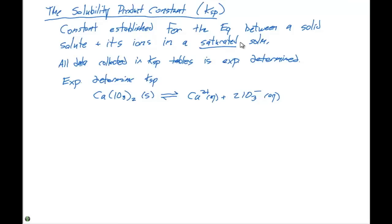When we write any type of K, it's going to be the concentration of the products divided by the concentration of the reactants. So when we write a KSP expression, the products are going to be the concentration of calcium two plus times the concentration of IO3 minus, that quantity squared. And in a K expression, we need to use the coefficients as the exponents in our expression.